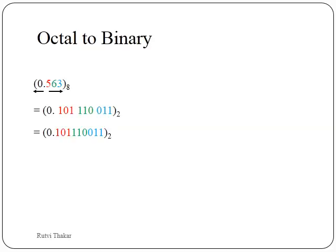Octal to binary: starting from the digit next to the decimal point, from left to right, we make groups of 3. If there are fewer than 3 bits we embed zeros after the last bit. So 5 is given as 101, 6 is given as 110, and 3 is given as 011. The octal number 0.563 is converted to 0.101110 11 in binary.